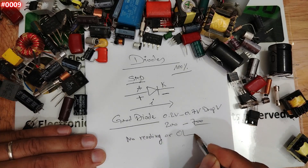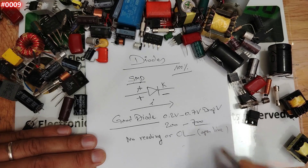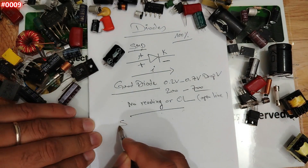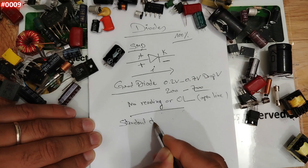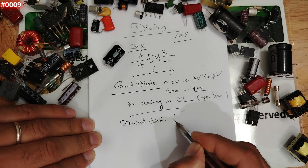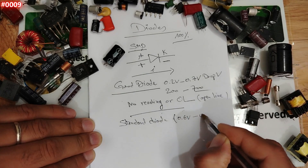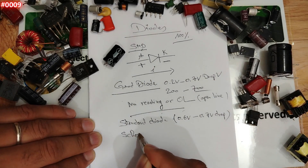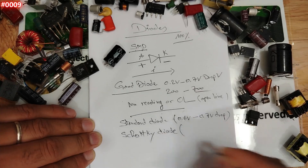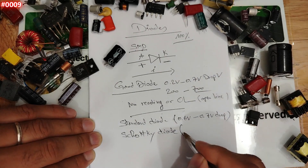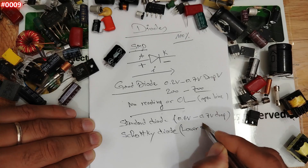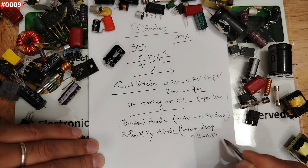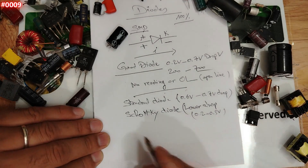This theory is very important. For a standard diode, the drop voltage should be 0.6 to 0.7 volts. But for a Schottky diode, the drop voltage is lower — around 0.2 to 0.3 volts. Remember these values — they help you identify which type of diode you are dealing with.